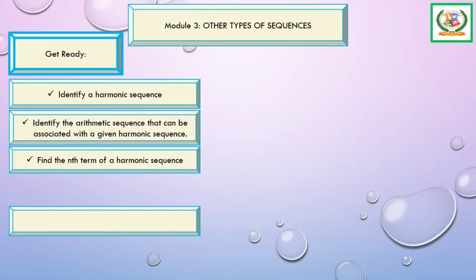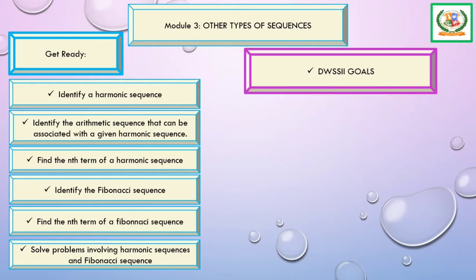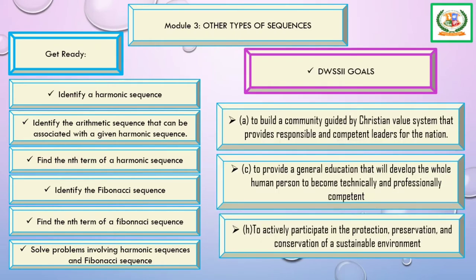So we have the following objectives. So that's 6. So I hope we attain those objectives in studying about harmonic sequence and the Fibonacci sequence. And for our DWSSII goals, so we have three. So again, we are doing these DWSSII goals because it will be the ways in order for us to be aligned in our vision and mission as a school.